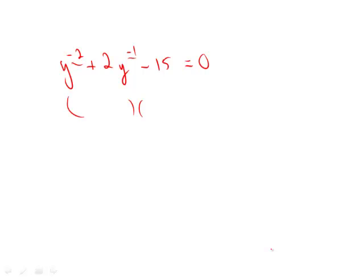Build our little parenthesis houses and put stuff inside there. We know that y to the negative 1 times y to the negative 1 gives you y to the negative 2. How do we know? When you multiply bases, you always add exponents, so negative 1 plus negative 1 is negative 2.